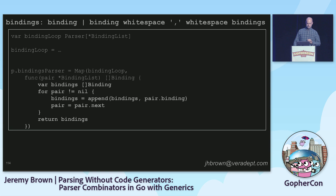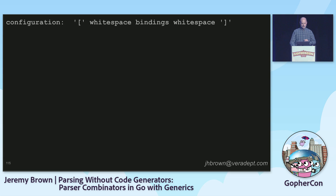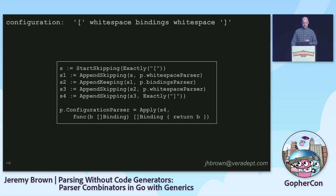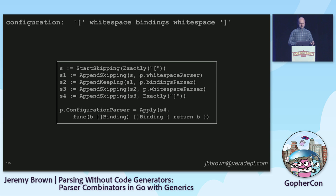Because of the recursion, if you have a really long list, you could conceivably blow the stack, since we don't do tail call optimization. There is a special sugar for stack-safe looping — I'm not going to be able to fit that into the time we have today, but it is on the GitHub repo. Now we can finish up the entire configuration language with one last sequence: get an open bracket, some whitespace, the bindings — that's the only thing we're keeping — then throw away the closing whitespace and bracket. And that's it. This is the entire configuration language specified in code as composable data structures.